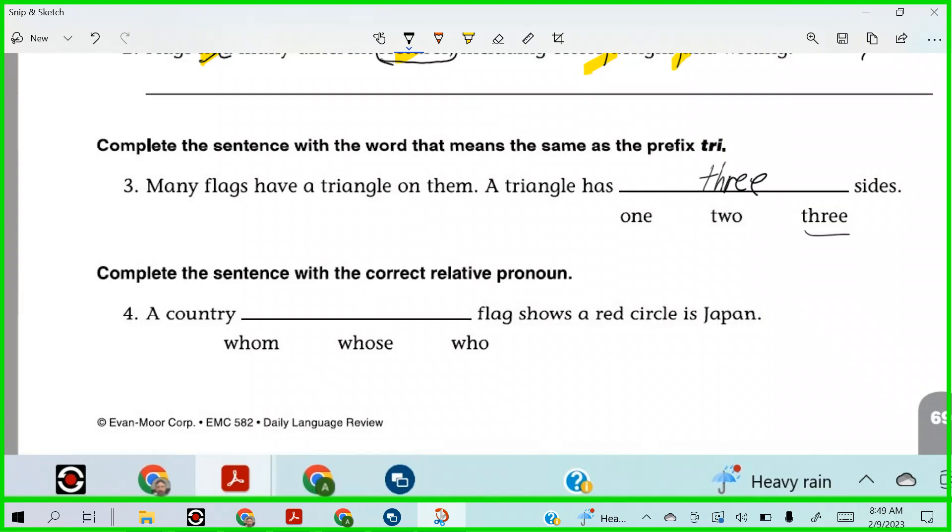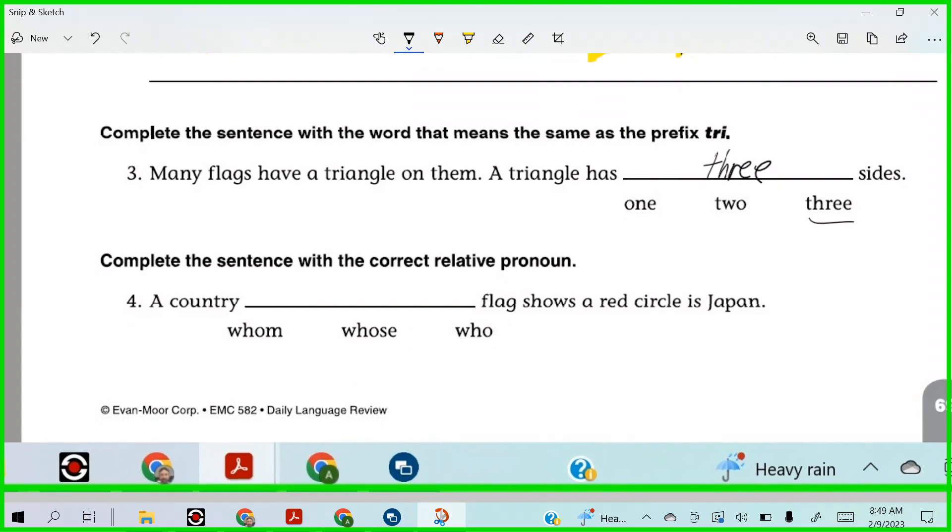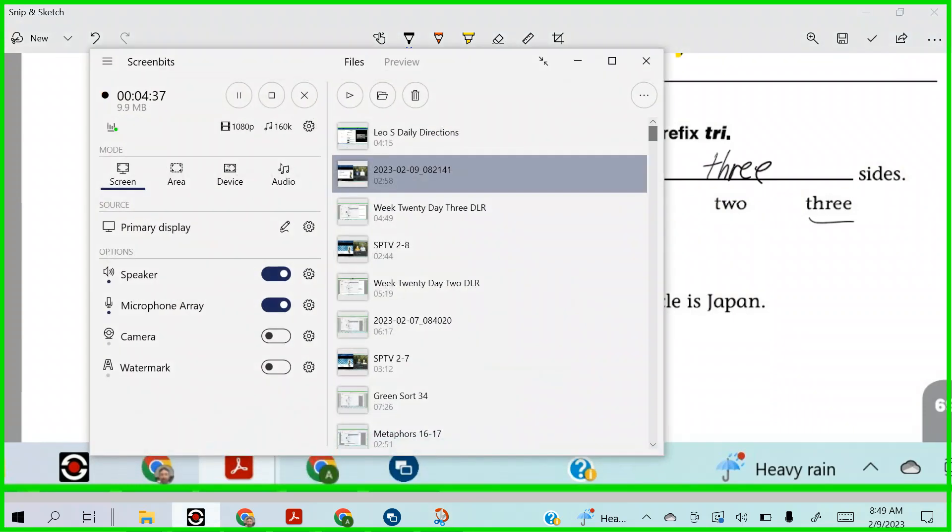Complete the sentence with the correct relative pronoun. Relative pronoun. So this one's a little trickier. Let's do it. A country whom flags shows a red circle is Japan. A country whose flag shows a red circle is Japan. Or a country whose flag shows a red circle is Japan. Vinny. Whose would be the relative pronoun. Alright. So there you have it. Week 20, day four DLR in the books. Tadaro out.